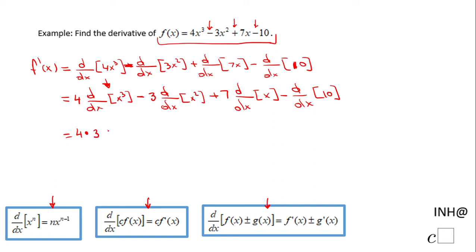Minus 3 times, now using the power rule here, I'm going to have 2 times x to the 2 minus 1, subtract 1 and you have x the first power.